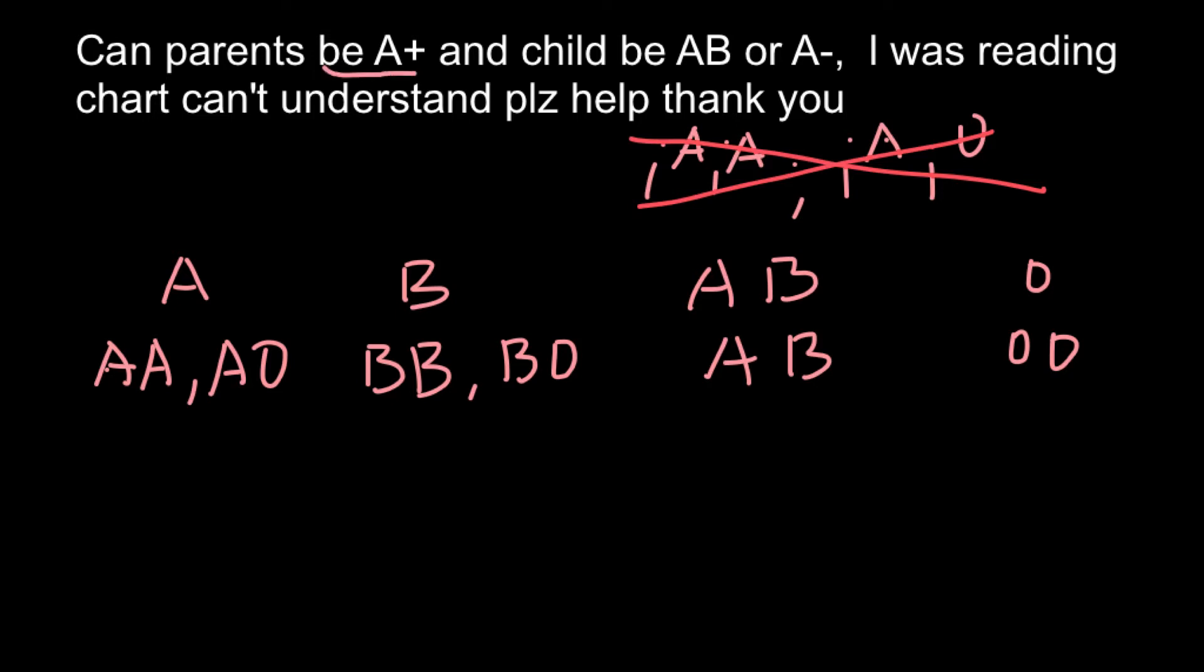So now let's see if two parents that belong to the blood group A may have children that would belong to the blood group AB or A. If parents belong to this blood group, the genotype can be AA or AO. Let's assume that both parents would belong to the genotype AO, because if we would cross AO with AO we can get more different variants in the progeny than if we would use for example AA and AA.